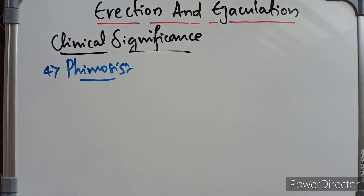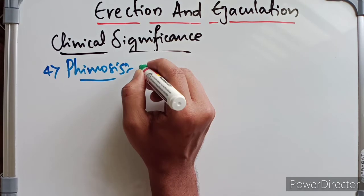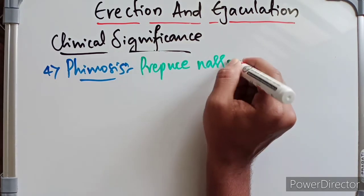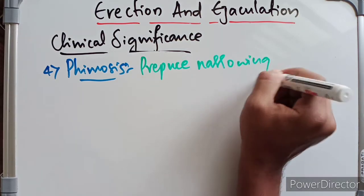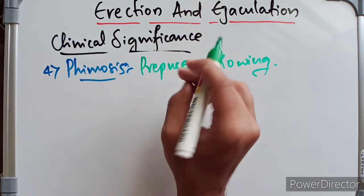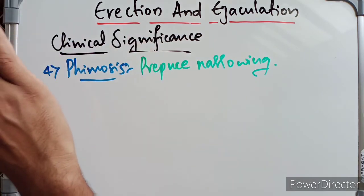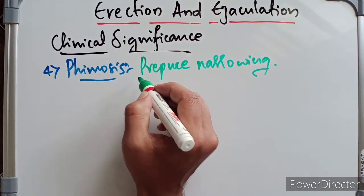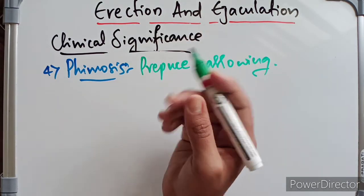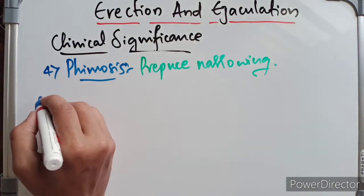Phimosis is the narrowing of the distal end of the prepuce. This prevents its retraction over the glans penis and also interferes with micturition. The prepuce should retract during sexual intercourse or micturition, but failure to retract due to adhesion leads to phimosis.